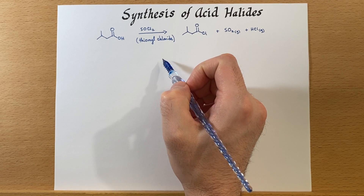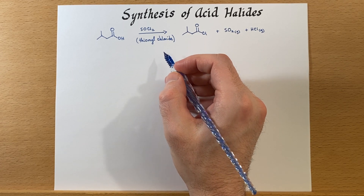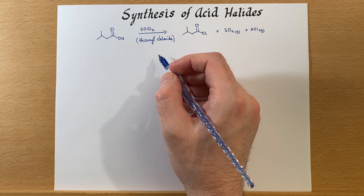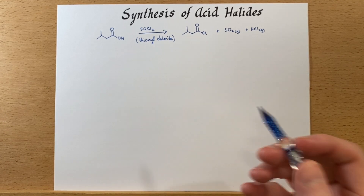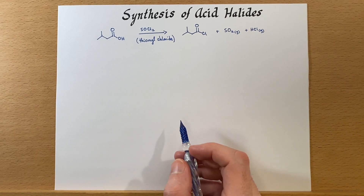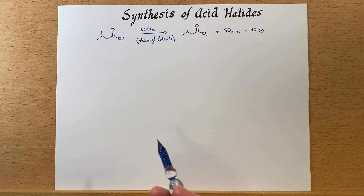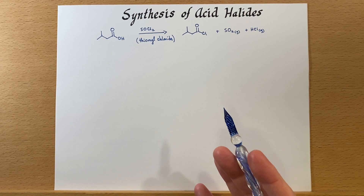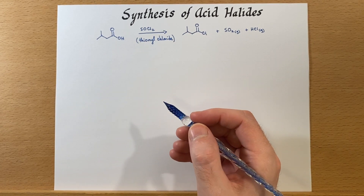One of the problems with thionyl chloride — and it is a wonderful reagent — is that sometimes it's hard to obtain. It's fairly reactive and it also has some weapons-related applications, so you'll have to fill out a bit of paperwork to obtain it. This shouldn't be a problem if you're at a university or a well-known research lab with documentation on what you're doing.